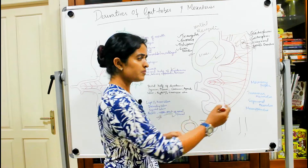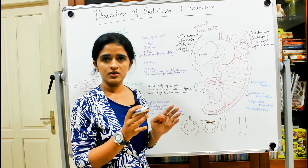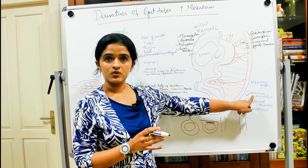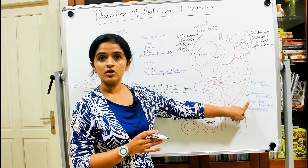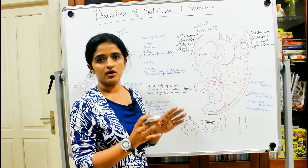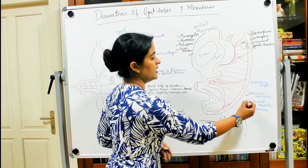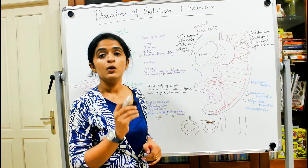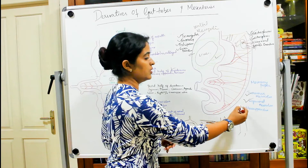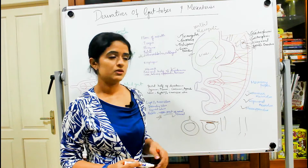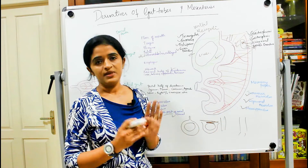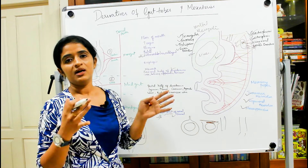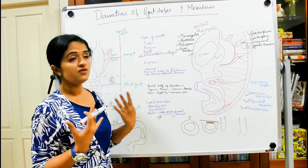In certain regions the mesocolon remains. For the transverse colon the remaining mesocolon is called the transverse mesocolon. For the sigmoid colon it is called the sigmoid mesocolon. A very small portion also remains with the appendix, which is known as the mesoappendix.